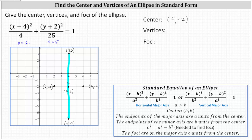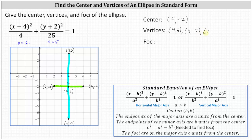The length of the minor axis is always 2b. These four endpoints are the vertices. Let's list them: (4, 3), (4, -7), (2, -2), and (6, -2).